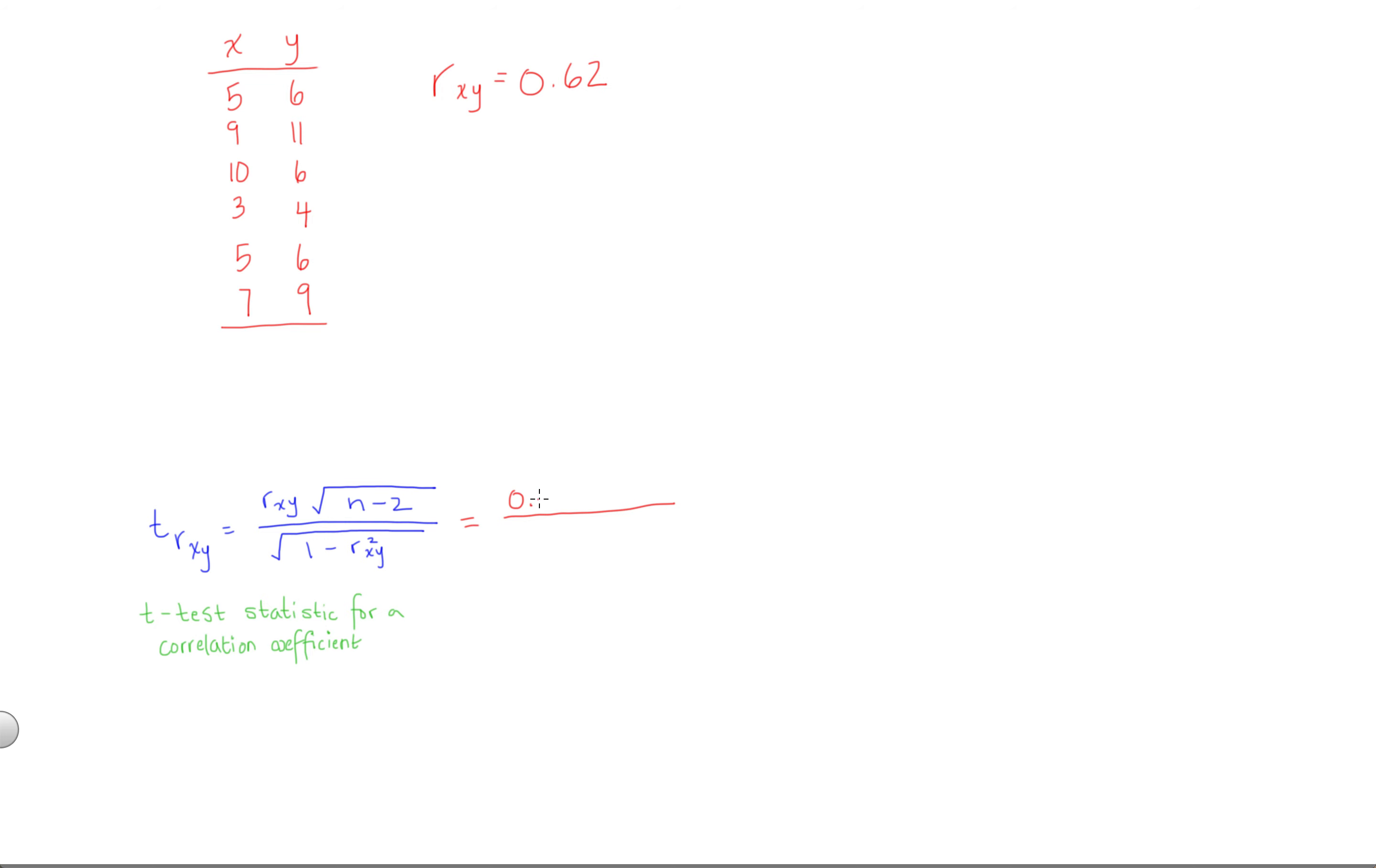In the numerator, we have the correlation, 0.62, times the square root of our sample size, n, minus 2. What's our sample size here? It's 6, right? We have 6 different people in the study. If I were to calculate my index column and number people off, you can see that there's 6.